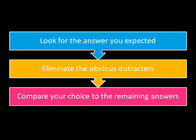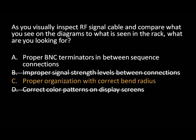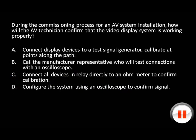Let's try applying this strategy with a couple of examples. Remember to scrutinize the stem first, looking for key terms, before looking at the answer choices. Here's a question from the CTSI practice exam: as you visually inspect RF signal cable and compare what you see on the diagrams to what is seen in the rack, what are you looking for? You're looking for an answer that discusses something you can see while inspecting cable. You can eliminate any answer that doesn't relate directly to cables or can't be detected by a visual inspection — B and D. You can't visually inspect the signal level of a cable, and option D asks about cables, not displays. Now look to see if one of the remaining choices matches the answer you expected. The correct answer is C, proper organization with correct bend radius.